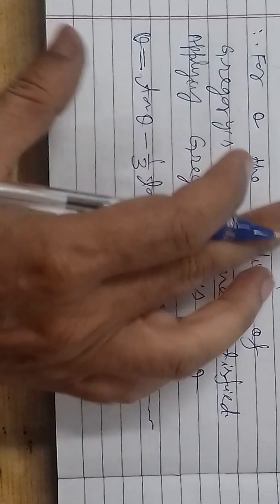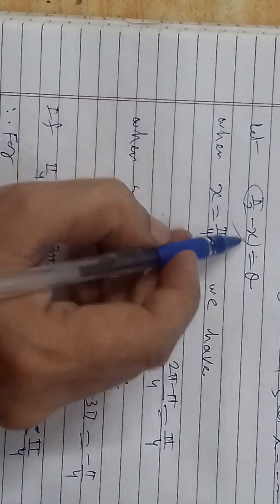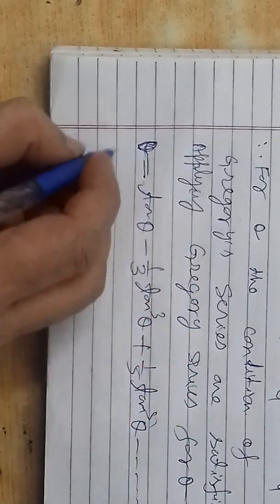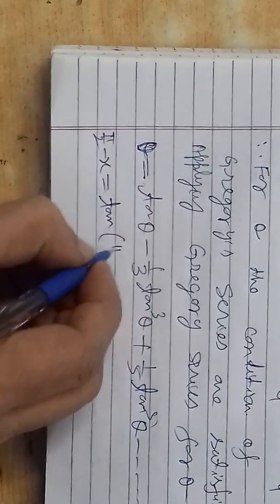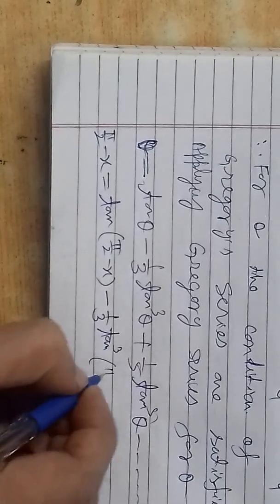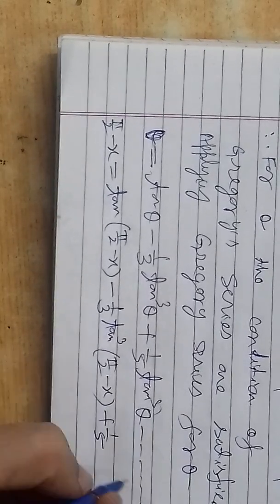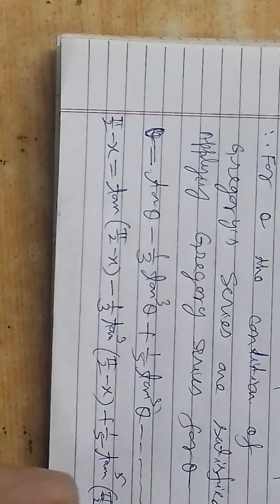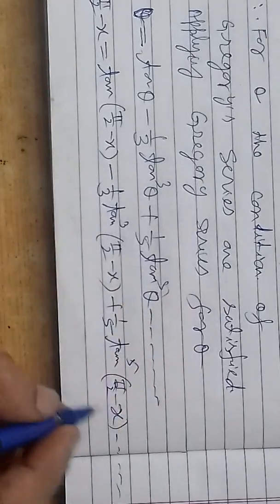Now the value of theta we assumed was π/2 minus x, so we put that back. θ = π/2 minus x was our substitution. The question was in terms of x, so we need to convert the whole equation back into x. Wherever we see theta, we replace with π/2 minus x. So: π/2 minus x = tan(π/2 − x) minus 1/3 tan³(π/2 − x) plus 1/5 tan⁵(π/2 − x) minus and so on to infinity.